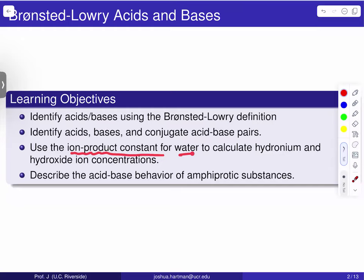We're going to use the ion product constant for water to calculate hydronium and hydroxide ion concentrations. And finally, we'll describe the acid-base behavior of so-called amphiprotic substances.